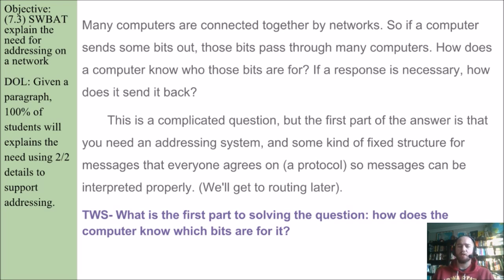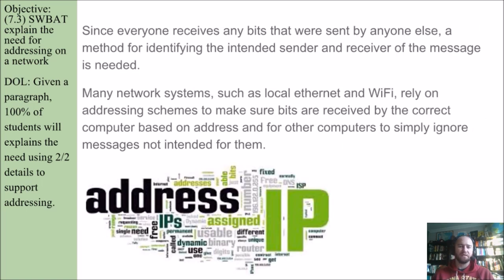Think, write, share: what is the first part to solving the question of how a computer knows which bits are for it? Since everyone receives any bits that were sent by anyone else, a method for identifying the intended sender and receiver of the message is needed. Many network systems, such as local Ethernet and Wi-Fi, rely on addressing schemes to make sure bits are received by the correct computer, and for other computers to simply ignore messages not intended for them.